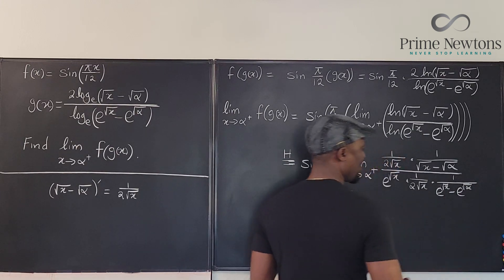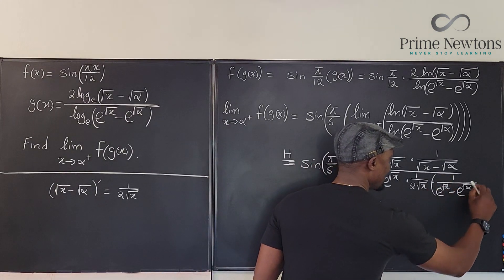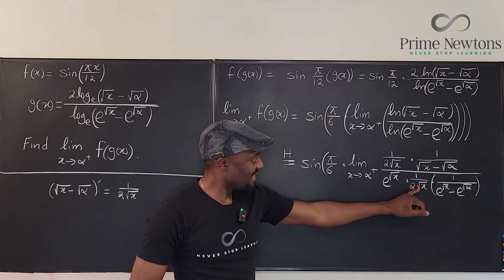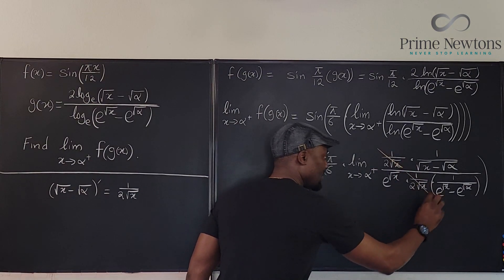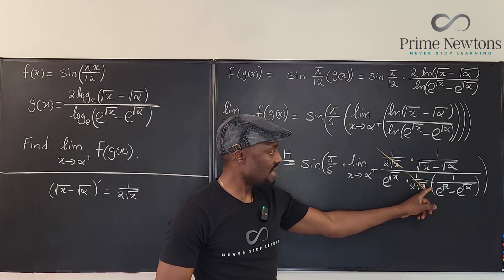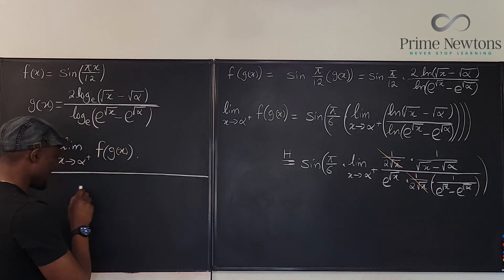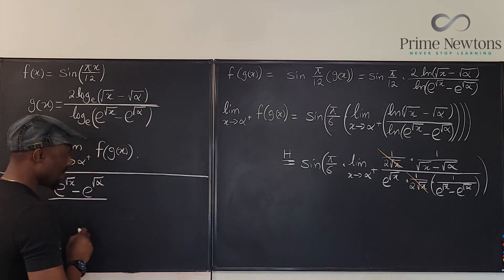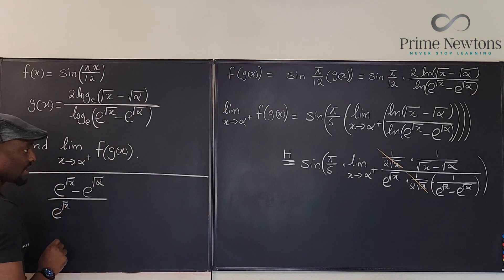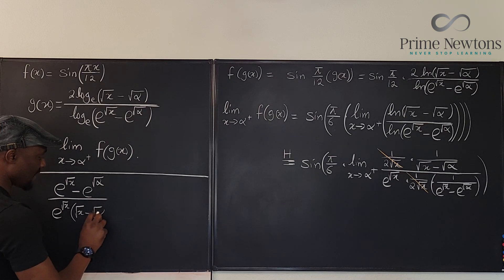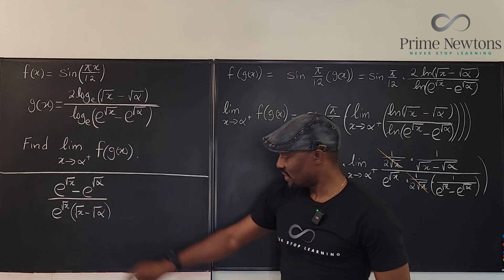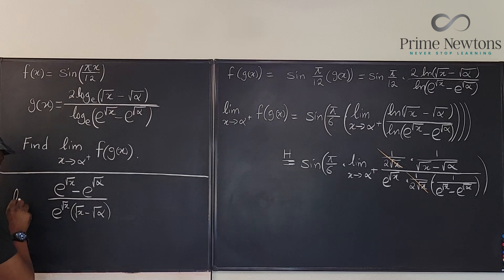We can clearly cancel the 1/(2√x) terms from numerator and denominator. The result after cancellation is: (e^√x − e^√α) divided by (e^√x · (√x − √α)). The bottom term drops down and the top flips up. So we're now computing the limit as x approaches alpha from the right of that new expression.